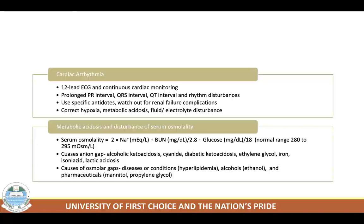Metabolic acidosis is a major manifestation of poisoning. Assessment includes arterial blood gas analysis and studies of serum sodium, potassium, chloride, carbon dioxide, BUN, creatinine, glucose, acetone, serum osmolality, and urine pH. Determination of the anion gap is helpful in diagnosis and management. Serum osmolality formula: 2 × Na (mEq/L) + BUN (mg/dL) ÷ 2.8 + glucose (mg/dL) ÷ 18; normal range is 280–295 milliosmoles per liter.